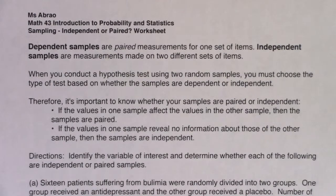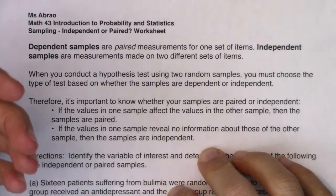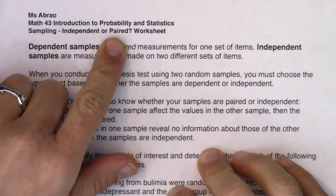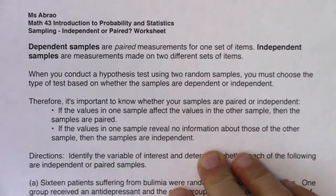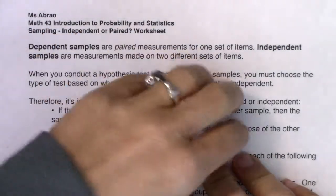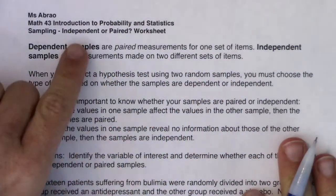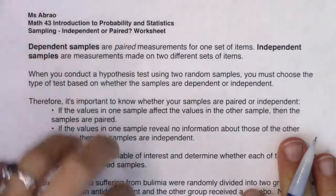Before we get into Chapter 10, we have to talk about sampling methods — specifically, when you have two samples, are they independent samples or paired samples? We need to have that discussion before we head into Chapter 10, because as you go through the Chapter 10 problems, you're going to see two different groups, and depending on whether your samples are independent or paired, we're going to have different procedures.